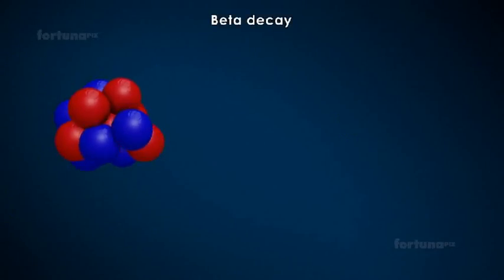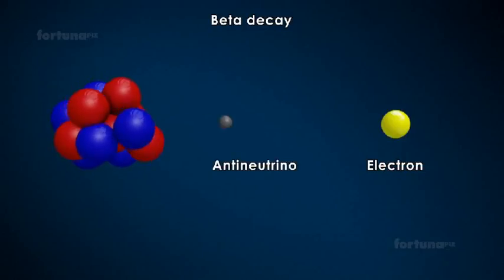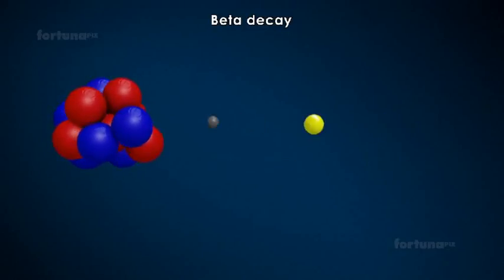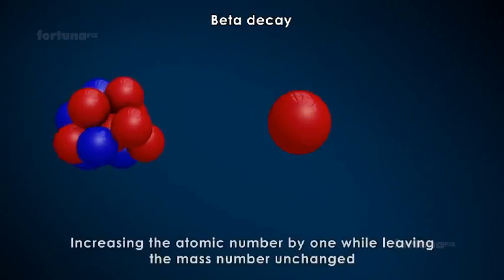During beta decay, an unstable nucleus will emit an energetic electron with a relatively small mass and an anti-neutrino with little mass. During this decay, a neutron will be converted into a proton, thereby increasing the atomic number by 1 while leaving the mass number unchanged.